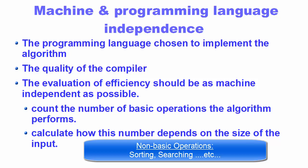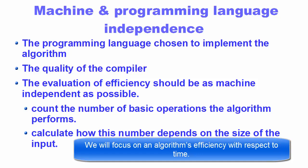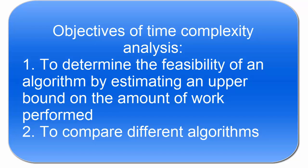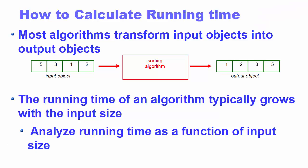In this course we are going to focus on the efficiency with respect to time, so we will speak about time complexity and skip space complexity, because often we use time complexity over space complexity to find out the efficiency of an algorithm. The objective of time complexity analysis is to determine the feasibility of an algorithm by estimating the upper bound of the amount of work performed, and to compare different algorithms before deciding which is best for solving a particular problem.